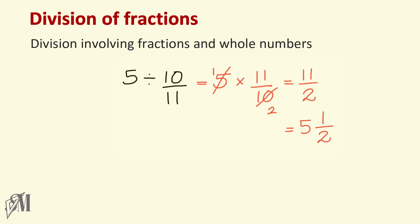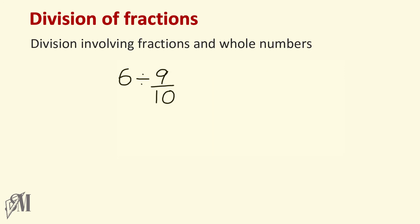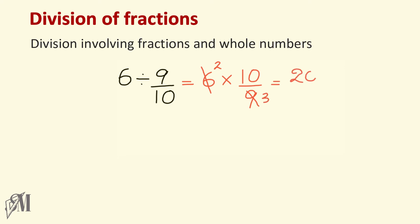The next example is six divided by nine over ten. Again, write six as it is, multiplication, then the reciprocal of nine over ten, which is ten over nine. Cancel six and nine by three to get two and three. Multiplying: two times ten is twenty over three. This is an improper fraction, so convert it into a mixed number — that becomes six and two over three.